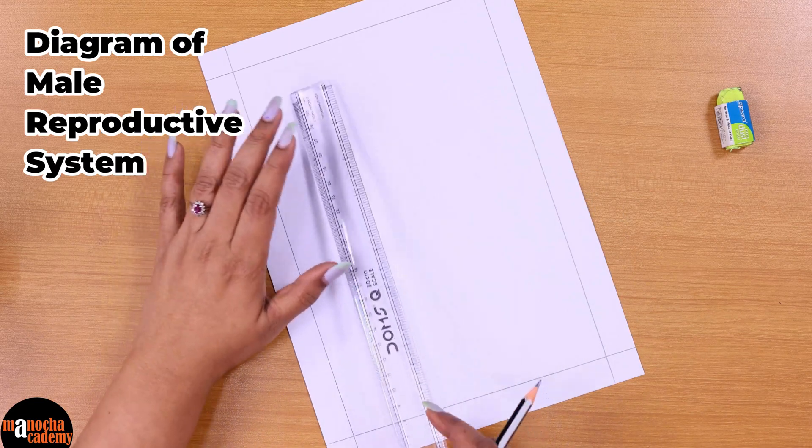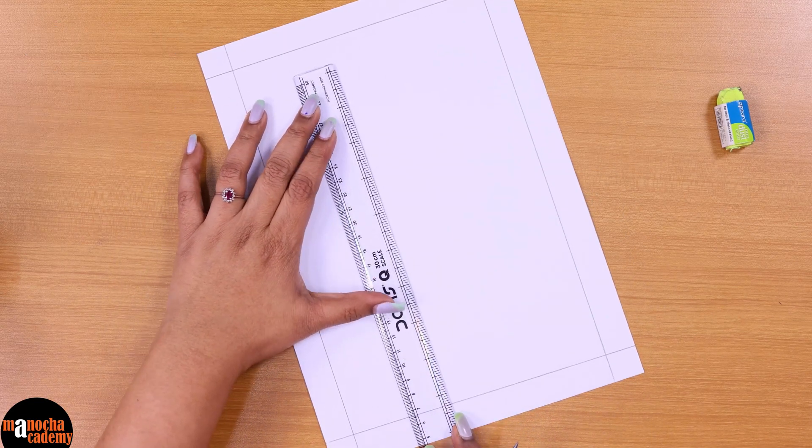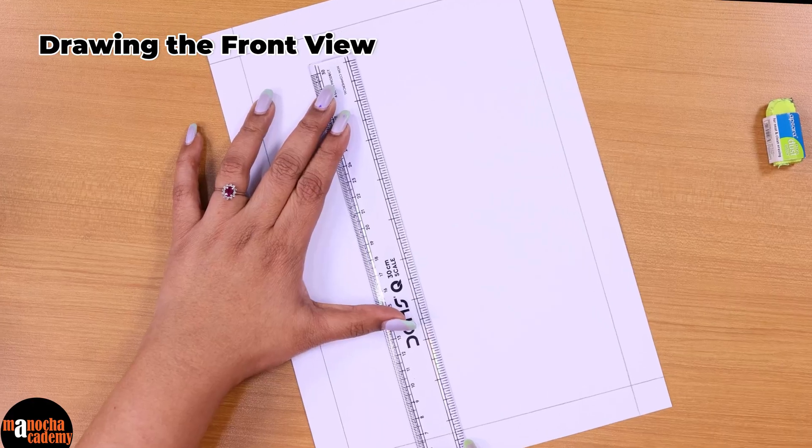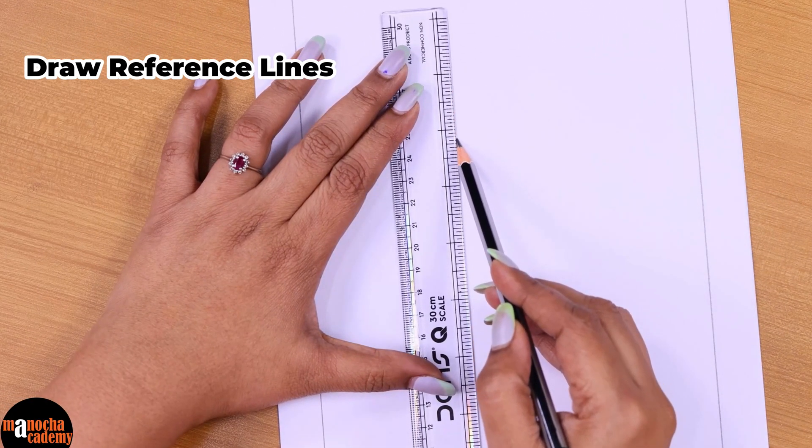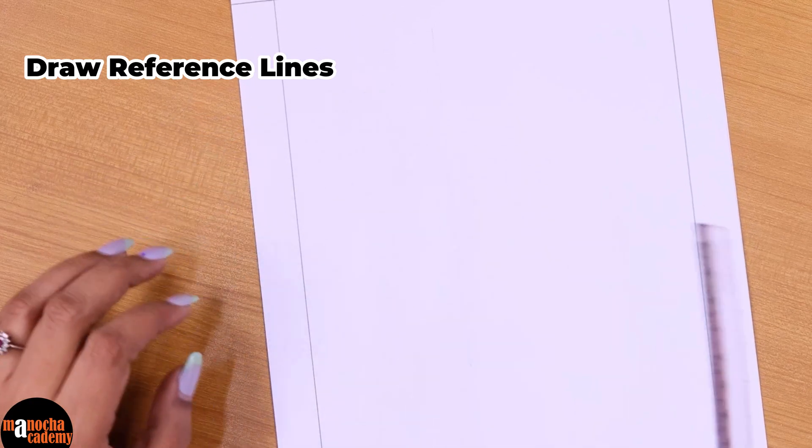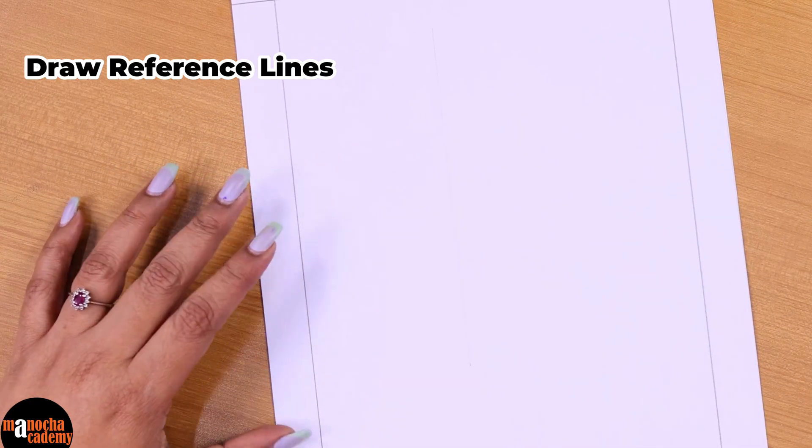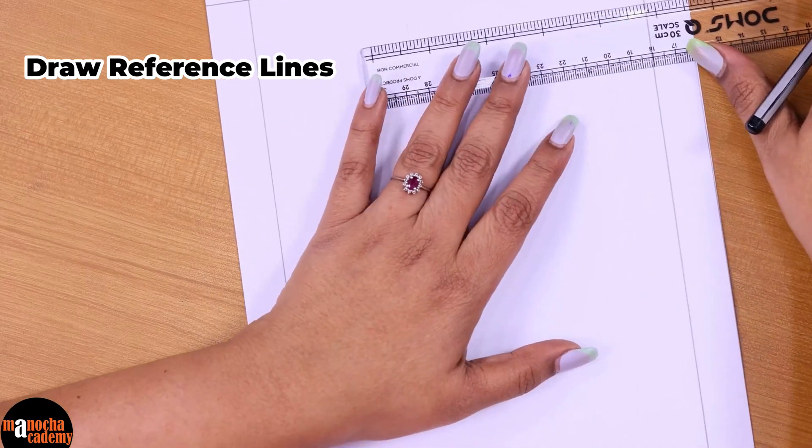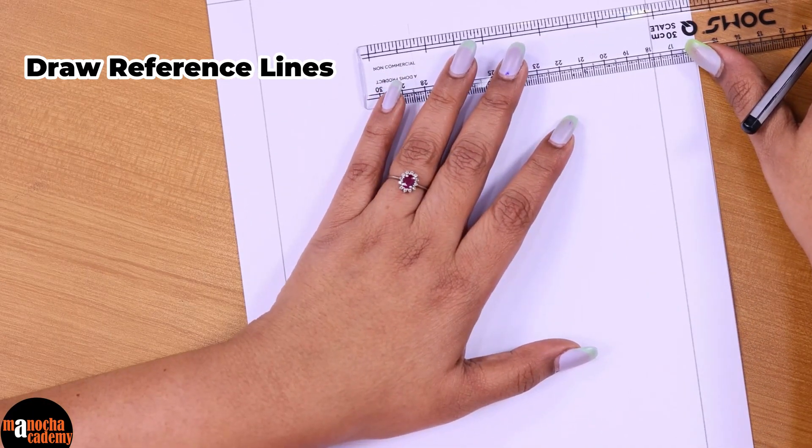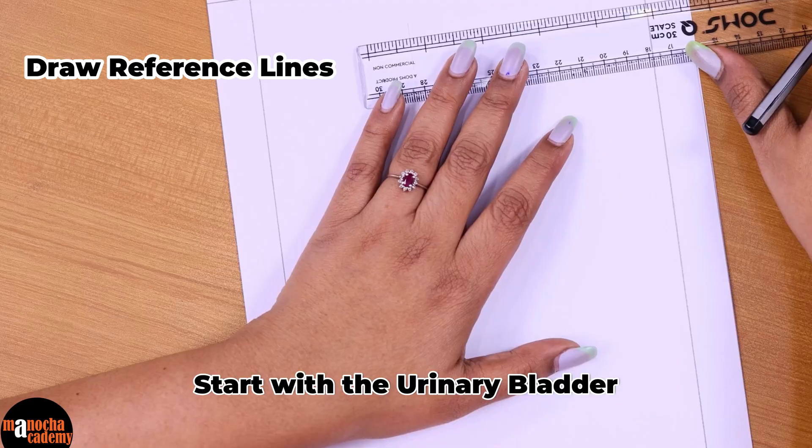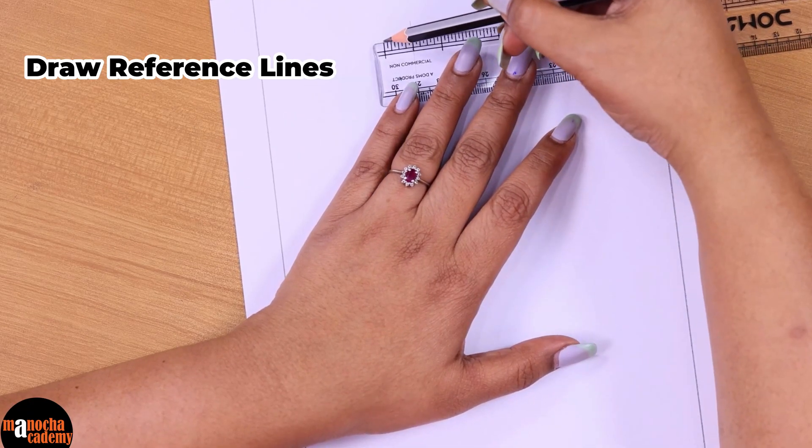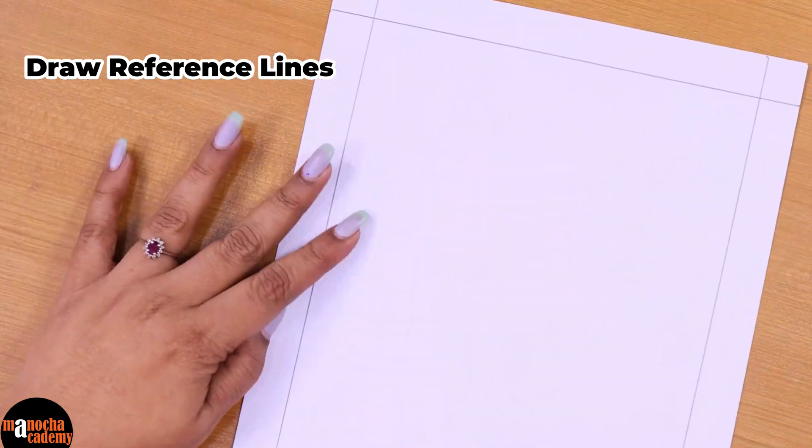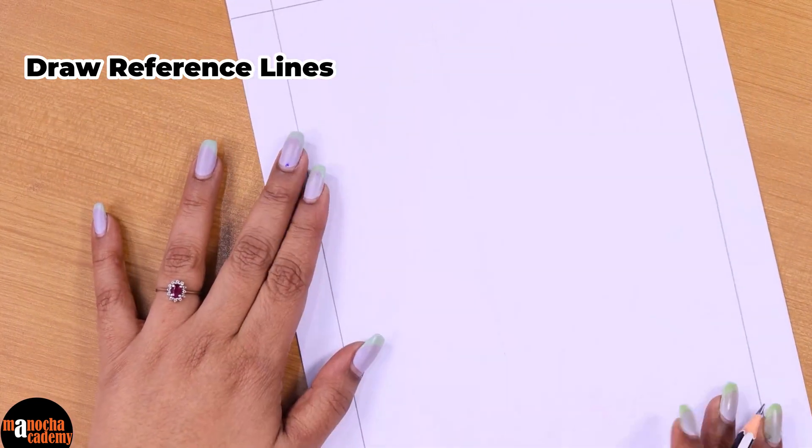Let us start the diagram of the male reproductive system. I'll be drawing the front view. As always, I'll take a reference line of about six inches. That would be the overall length of the diagram. At the top where I will be drawing the urinary bladder, I'm taking about half an inch, but I will be drawing the urinary bladder a little wider than that.